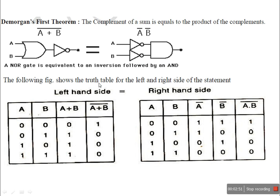The truth table is constructed for the left side and right side of the statement. The left-hand diagram and right-hand diagram are each verified through their respective truth table columns.